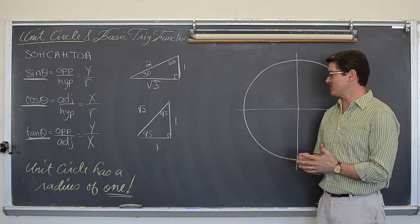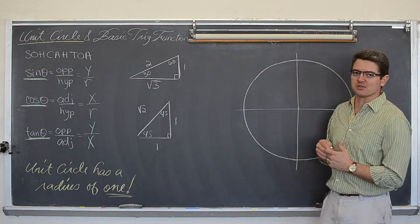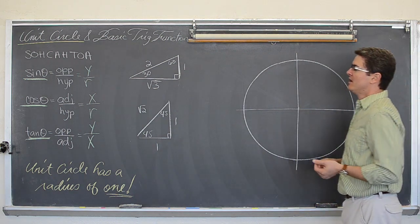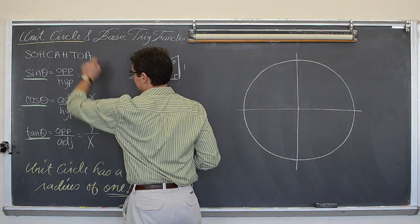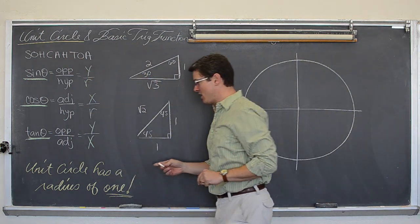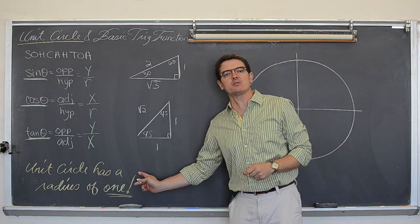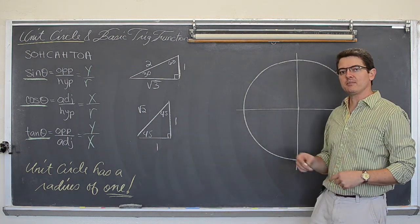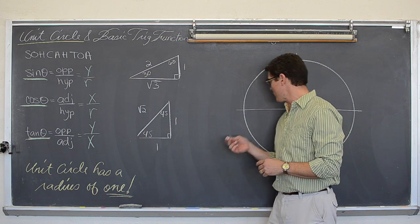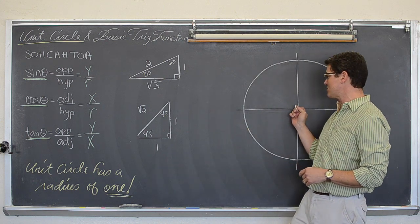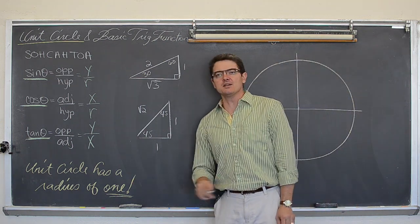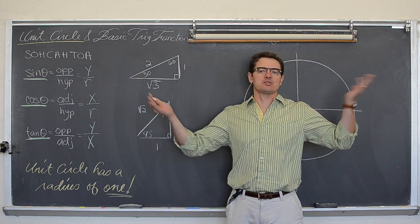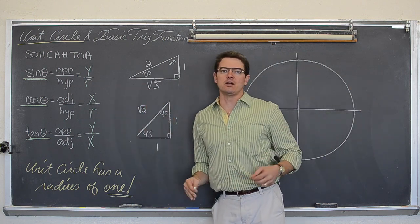Let's just get to this unit circle so you can see what the final product is going to look like. Now, a unit circle is simply a circle whose center is on the origin, all of our angles are in standard position, the vertex is on the origin, and the radius is one. That is the big deal — unit circle, radius is one.